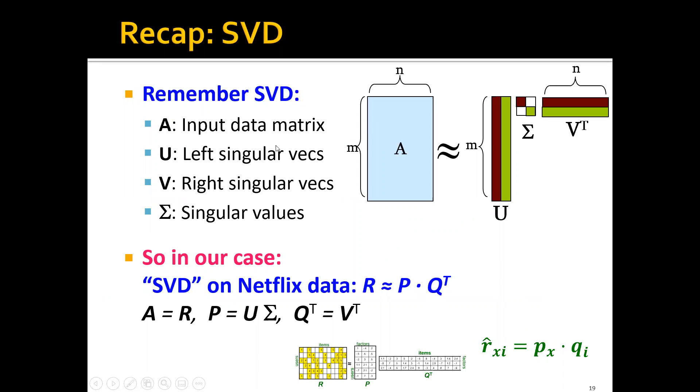As a recap, remember that in SVD, we factorize the input data matrix into three matrices: U, the left singular vectors; V, the right singular vectors; and sigma, which contains the singular values. In our case, the SVD on the Netflix data, we are trying to factorize the rating matrix into two matrices, P and Q.